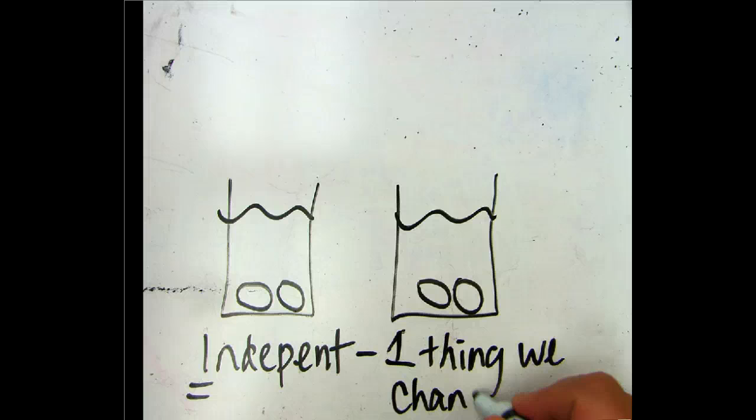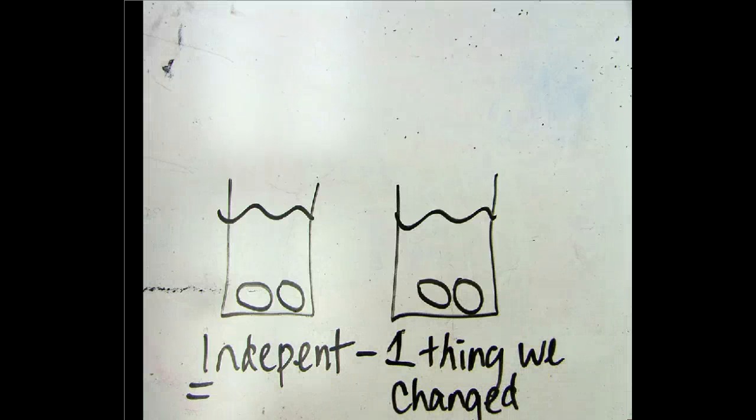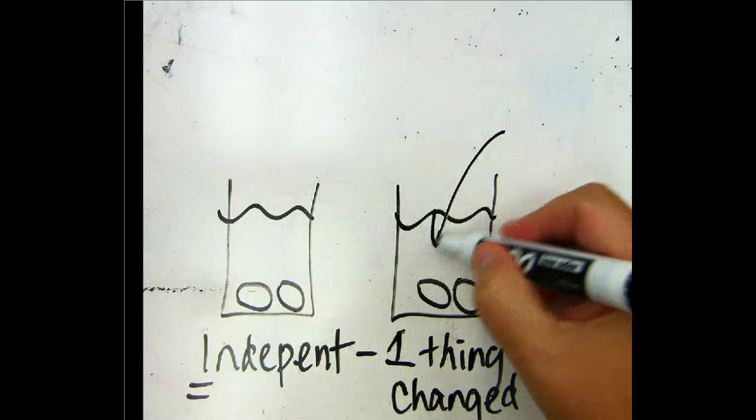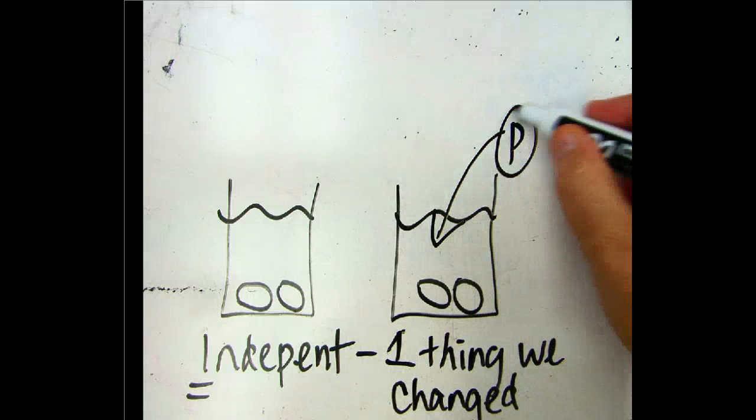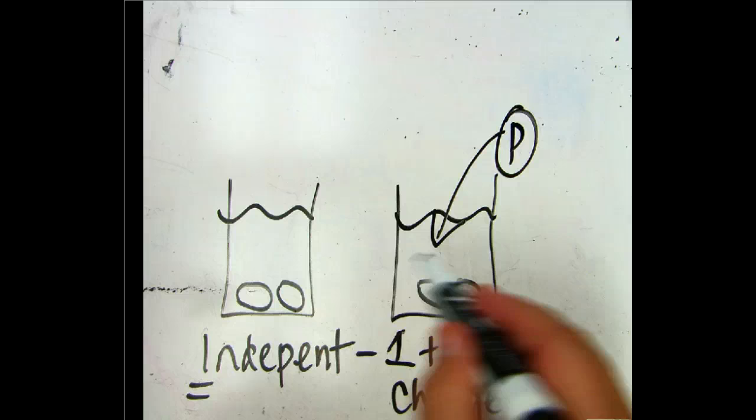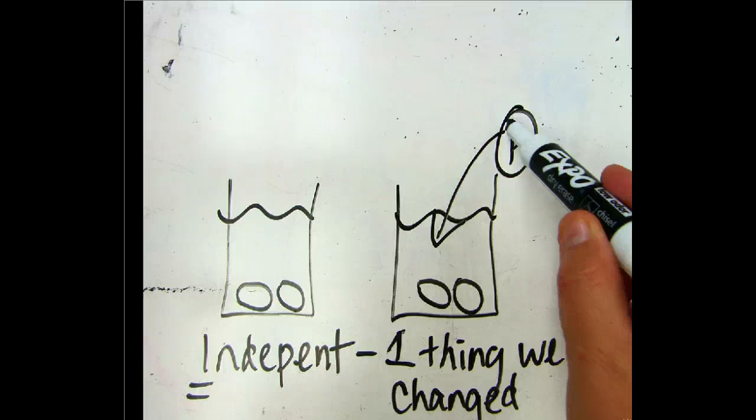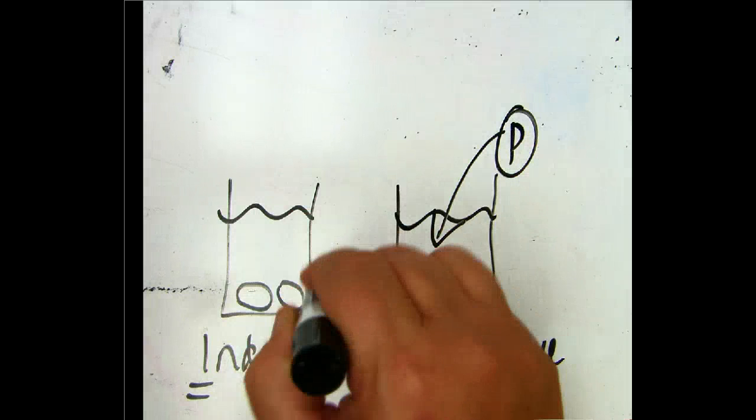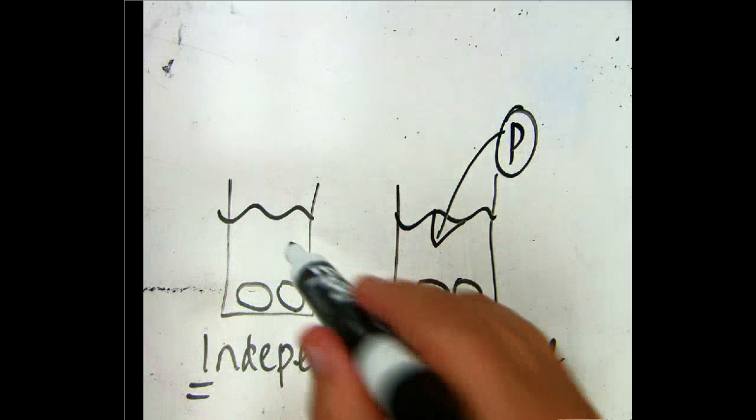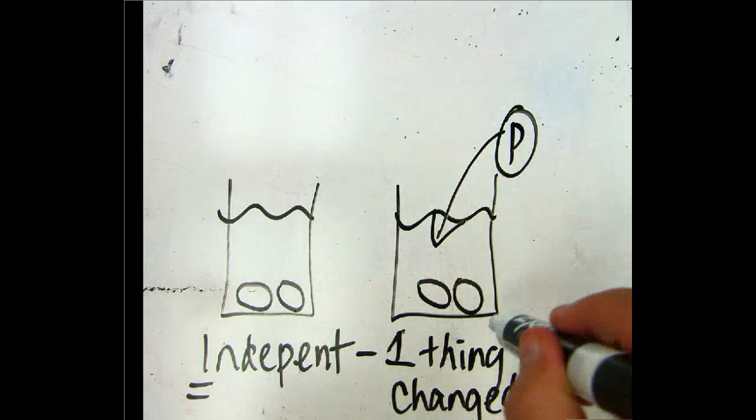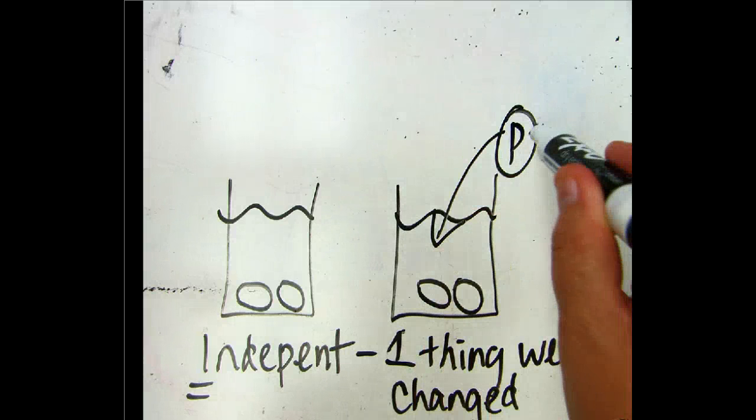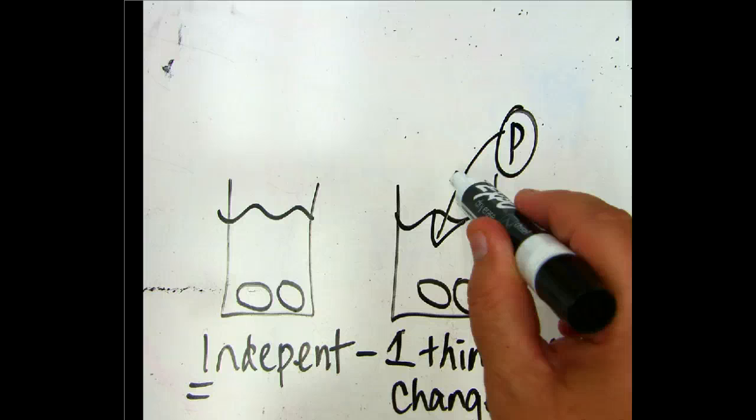And the one thing that we change in the mussel group is in this one, we added phosphate. If you remember, we were trying to find out what was killing the mussels. So in one container we didn't put anything other than the mussels and the water. But in the other container, we put the mussels in the water, and one more thing, we put phosphate in.